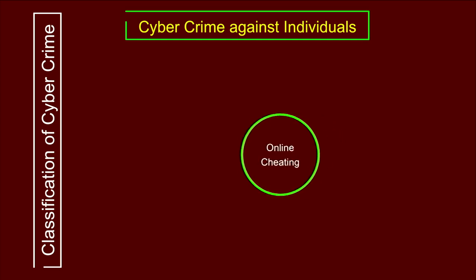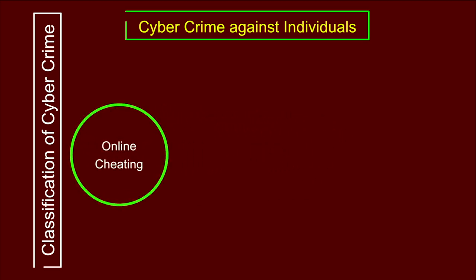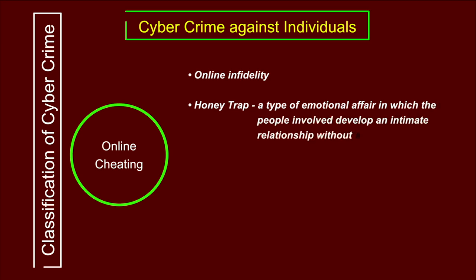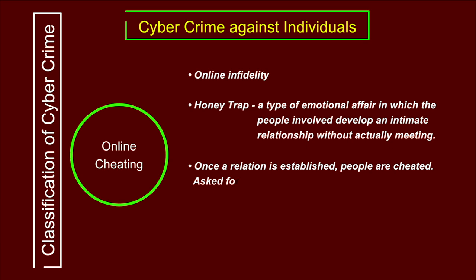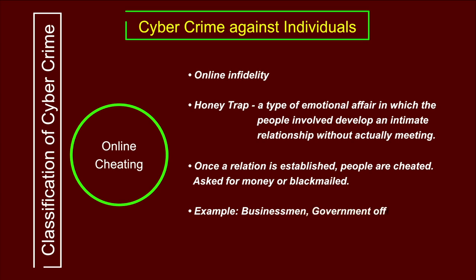The next category is online cheating, also referred to as online infidelity, and sometimes called a honey trap. It is a type of emotional affair where people develop an intimate relationship without actually meeting. Once a relationship is established, people are cheated and asked for money or blackmailed. Many businessmen and government officials in the country have been trapped using honey traps and asked for ransom.